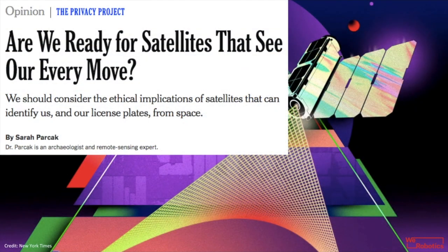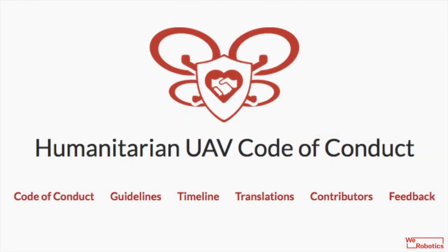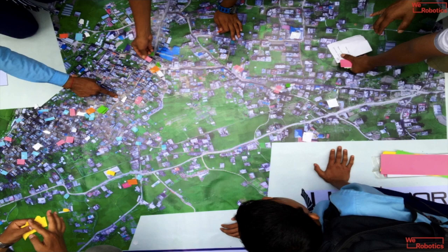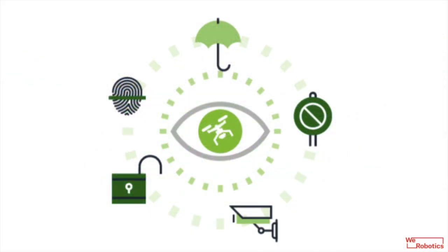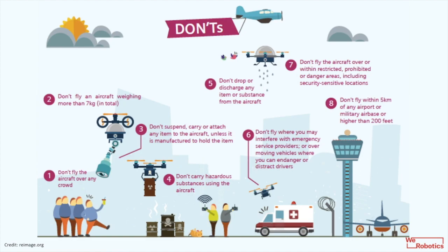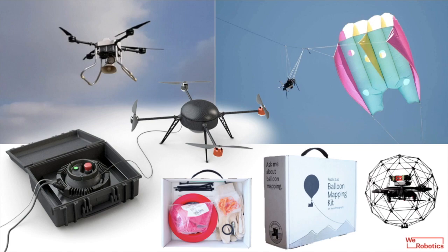We'll consider the ethical implications of using remote sensing. We'll look at the humanitarian UAV drone code of conduct. We'll emphasize the importance of community engagement. We'll look at privacy implications and data protection protocols. Drones are flying blenders — that is why we need to have processes in place to ensure that we are using these technologies responsibly, safely and effectively. We'll look at the broader drone regulations in different countries around the world.